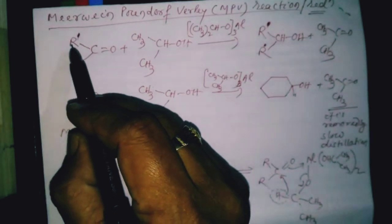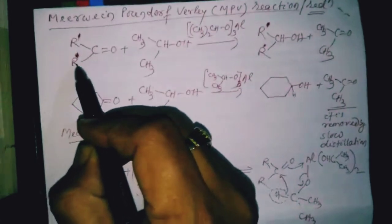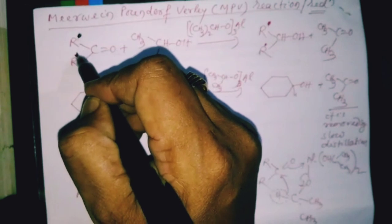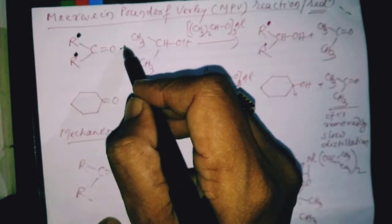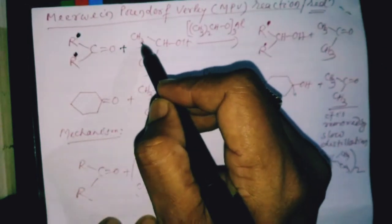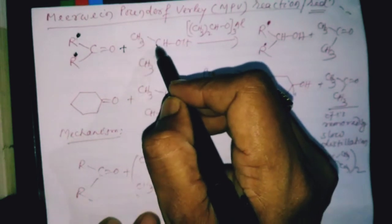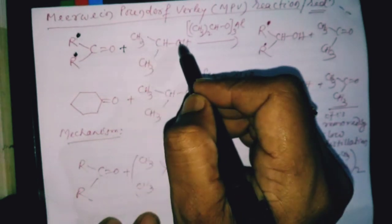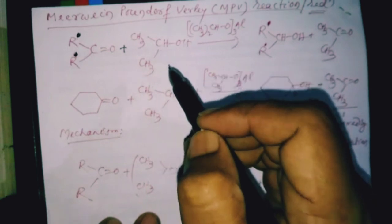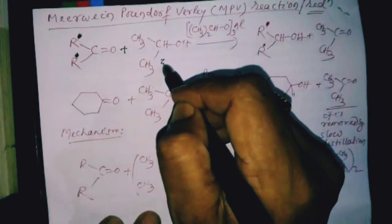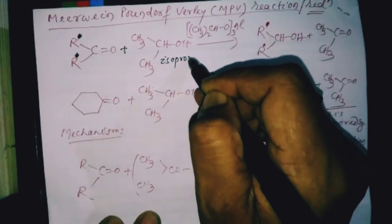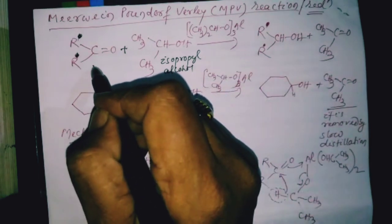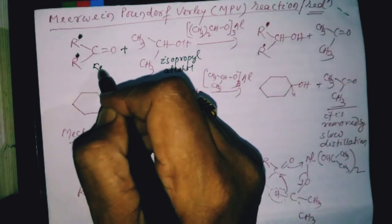This is a ketone, R-CO-R — this is a carbonyl compound. We are going to add this carbonyl compound with isopropyl alcohol, (CH3)2CHOH. This is isopropyl alcohol, and this is a carbonyl compound — a ketone.